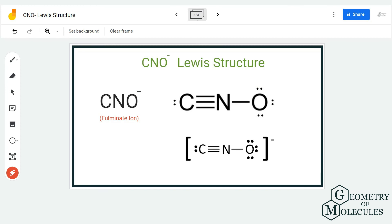As we're writing this Lewis structure for an ion, we have to place brackets and mention the charge. This is how you represent the Lewis structure for CNO minus ion, which is fulminate ion.